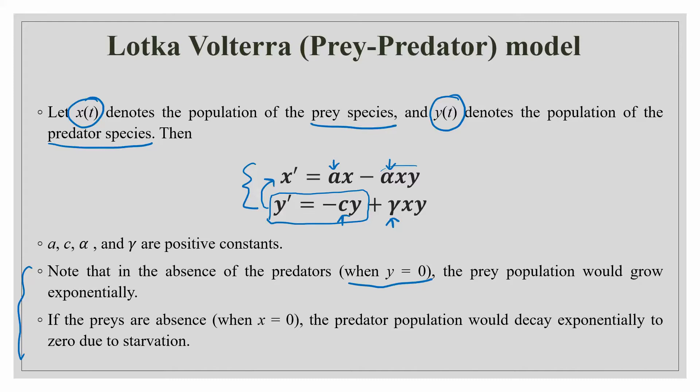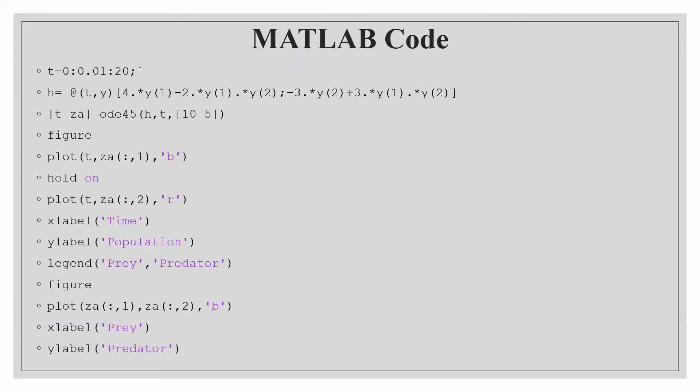So let us see how we can code this on MATLAB. Here I have taken T from 0 to 20. T will be equal to 0 to 20 and this T will be discretized into 0, then 0.01, then 0.02 and so on till 20.